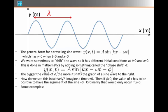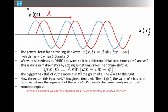Here are some examples. Let's suppose phi is pi over 2. This means we get the argument kx minus phi equal to 0 whenever kx is equal to pi over 2, or x is equal to lambda over 4. Let's suppose phi is equal to pi. This means we get the argument of the sine function to be equal to 0 whenever x is equal to lambda over 2.